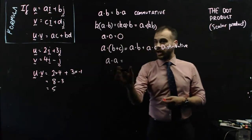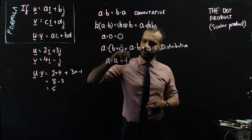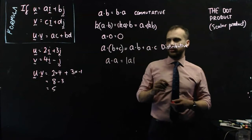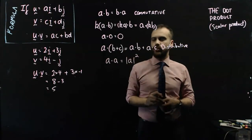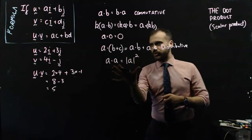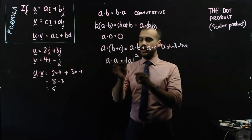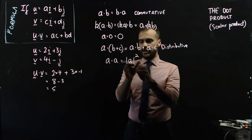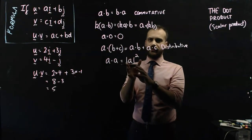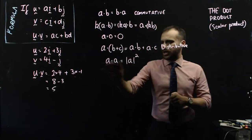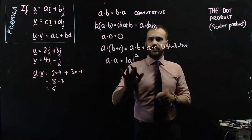And finally, we can say that a dot a is equal to the magnitude of a squared. And you might actually want to try that just by taking u, two i plus three j, and finding the dot product of that, and you'll see that it ends up feeling a lot like finding the magnitude. So a dot a equals the magnitude of a squared.